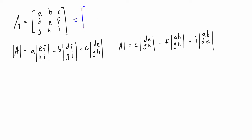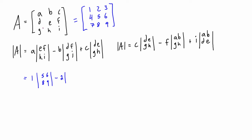Applying numbers to this: let's say our matrix has values 1, 2, 3, 4, 5, 6, 7, 8, 9. We want to find the determinant of A. Element a is 1, multiplied by the determinant of sub-matrix [5,6,8,9]. The next term is negative: element b is 2, times the determinant of [4,6,7,9]. The last term is positive: element c is 3, times the determinant of [4,5,7,8].